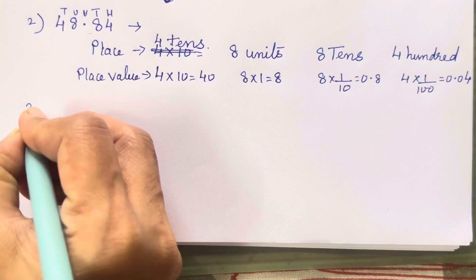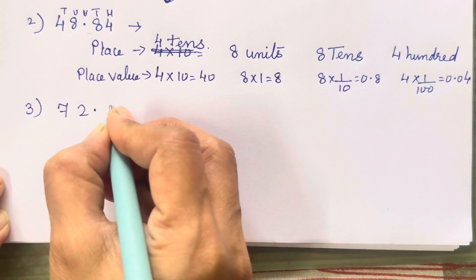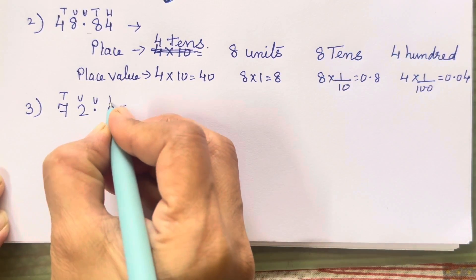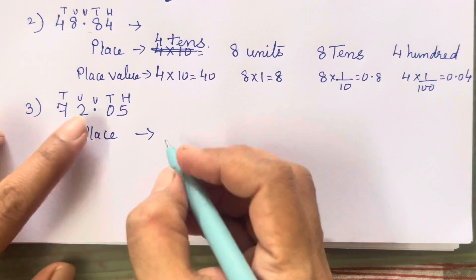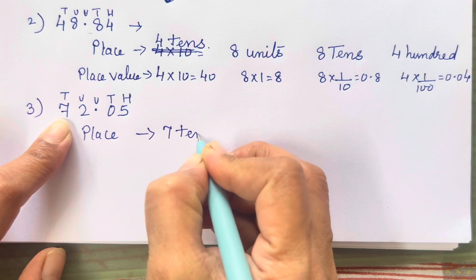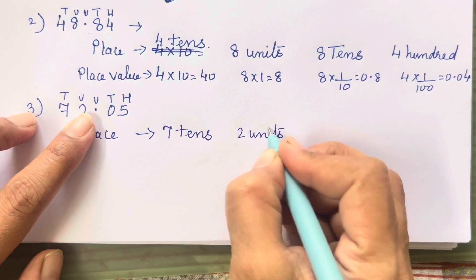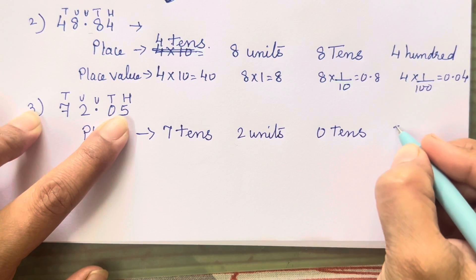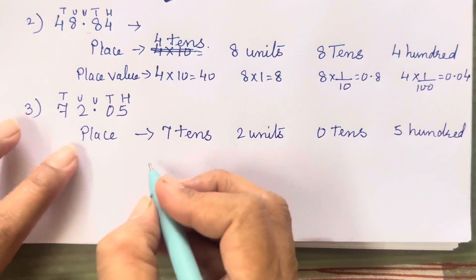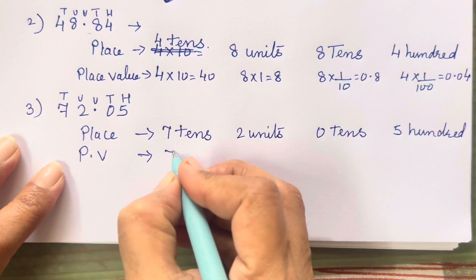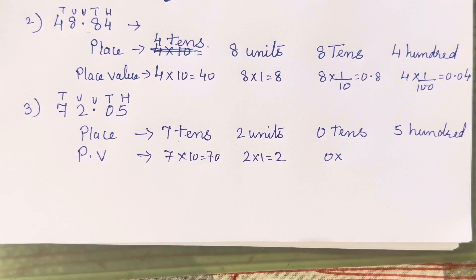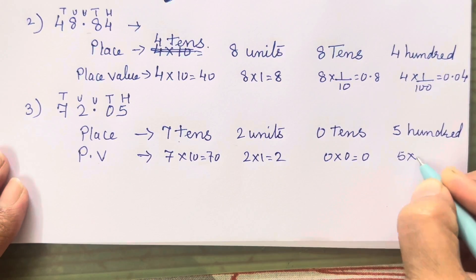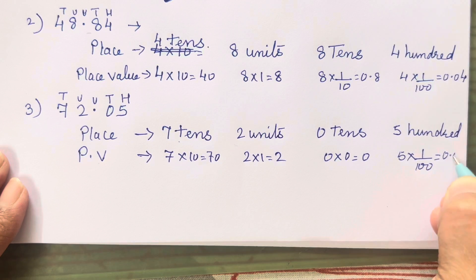Let's move on to the third sum — this is a little tricky, but it is very easy; you just need to practice, children. The number is 72.05. Place: 7 is in the tens place, 2 is in the units place, 0 is in the tenths place, 5 is in the hundredths place. Place values: 7×10 = 70; 2×1 = 2; 0×(1/10) = 0 (anything multiplied by 0 is 0); 5×(1/100) = 0.05.